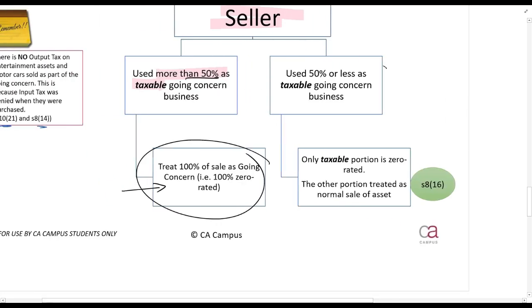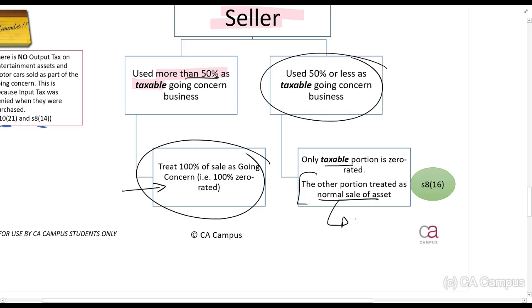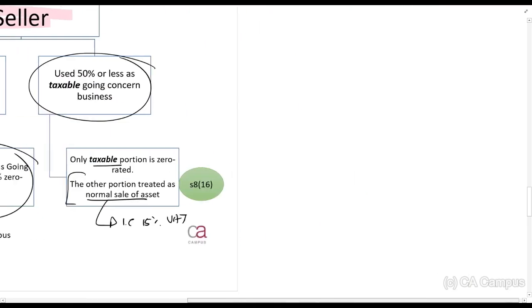If the seller used it less than 50% as a going concern, then only the taxable portion is zero rated and the rest is treated as a normal sale of assets — meaning 15% VAT.